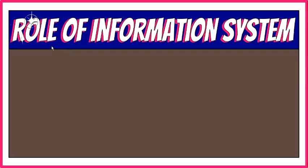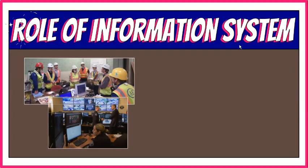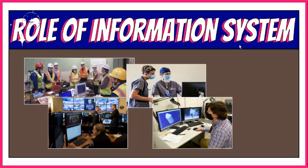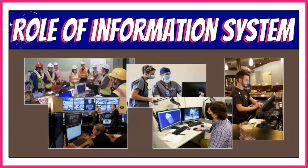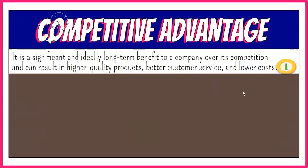To aid a company with its value chain, information systems are often involved as part of the organization's activities themselves. The information systems play an integral role in the process, whether providing input, aiding product transformation, or producing output. Analyzing the value chain gives businesses a visual model of the activities, which may or may not involve information systems, allowing them to determine where they can reduce costs, increase sales, and take steps to create a competitive advantage.